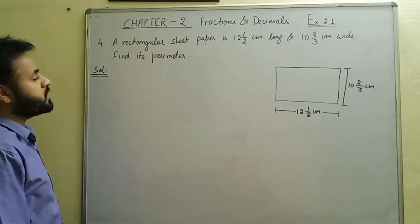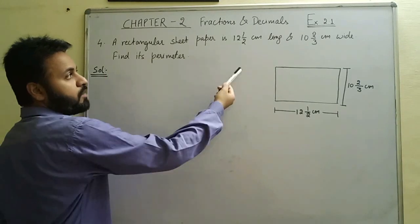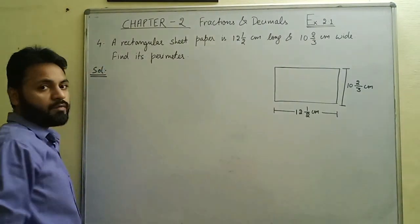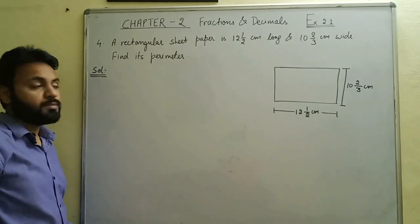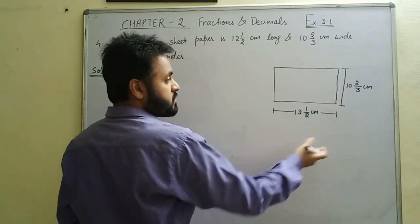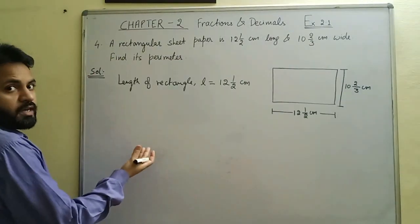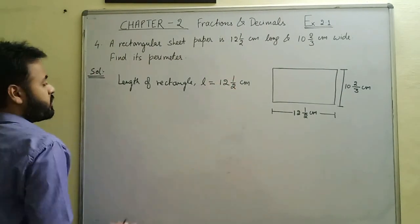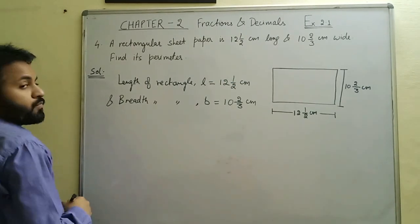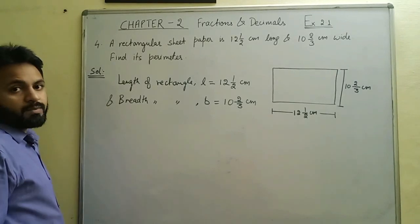In question 4 we have a rectangular sheet of paper which is 12½ cm long and 10⅔ cm wide. We have to find its perimeter. We know that the perimeter of a rectangle is the sum of all its sides. The length is 12½ cm and the breadth is 10⅔ cm. The formula is perimeter = 2 × (l + b).